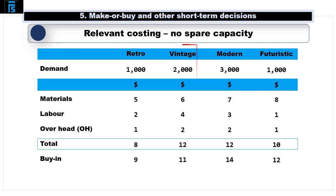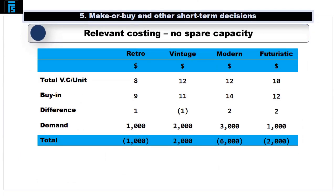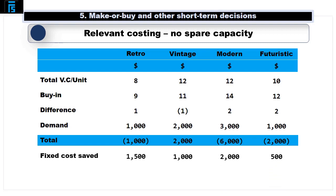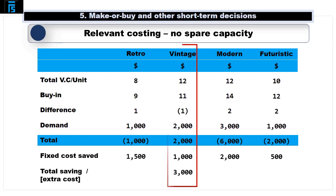We can immediately see that it is cheaper to buy in the vintage shirts than to make them in-house, so clearly it would make sense from a financial perspective to buy vintage shirts in rather than making them in-house. We also need to look at the fixed costs we might save by buying in products rather than making them. If we assume that we would save $1,500 of fixed costs by buying in retro shirts, $1,000 by buying in vintage shirts, $2,000 by buying in modern shirts, and $500 by buying in futuristic shirts, we can now work out the total saving or extra cost of buying in rather than making. We can now see that not only is it wise to buy in vintage shirts, but we should also consider buying in retro shirts, as we can make a saving of $500 based on a demand of 1,000 units. On the other hand, it costs an extra $4,000 to buy in modern shirts compared to making them, and an extra $1,500 in the case of futuristic shirts.